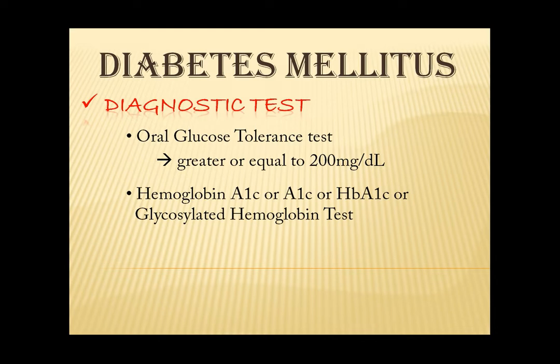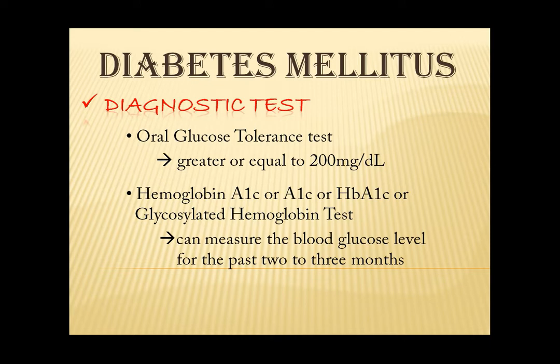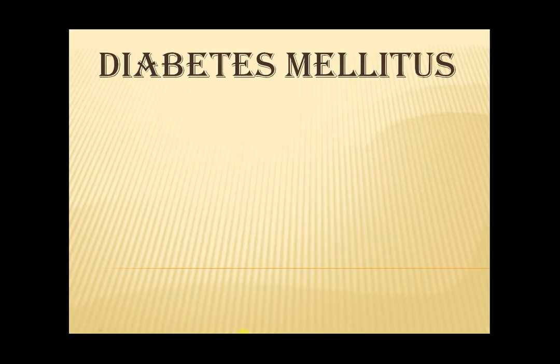Lastly, we have the hemoglobin A1C, also called A1C, HbA1C, or glycosylated hemoglobin test — these are all the same. It measures the amount of glucose attached to hemoglobin in the bloodstream. Hemoglobin is a protein found inside the red blood cells that carries oxygen to the body. This test can measure the blood glucose level for the past 2 to 3 months. If there is too much glucose attached to the hemoglobin cells, the result will be higher — usually 6.5% or higher.